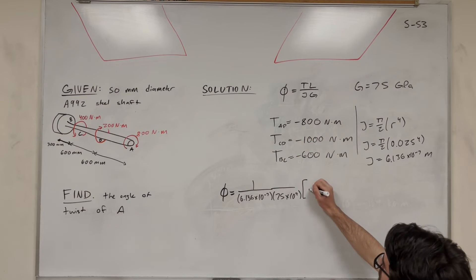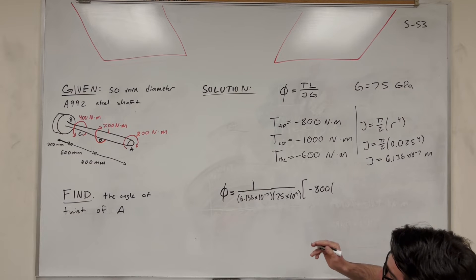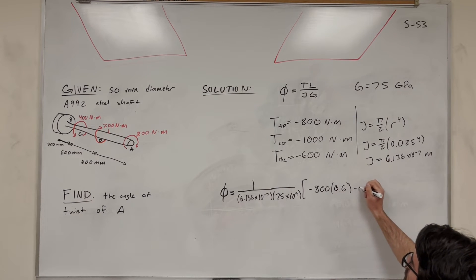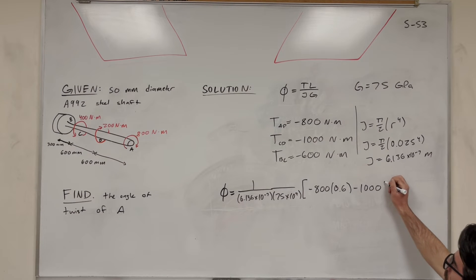So then let's start adding them up. So TL. So we'll start with AD. It's going to be negative 800 newton meters times its length, 600 millimeters. So it's 0.6 meters. The next one, negative 1,000 times its length, 0.6. And then the next one, negative 600 times its length, 0.38.